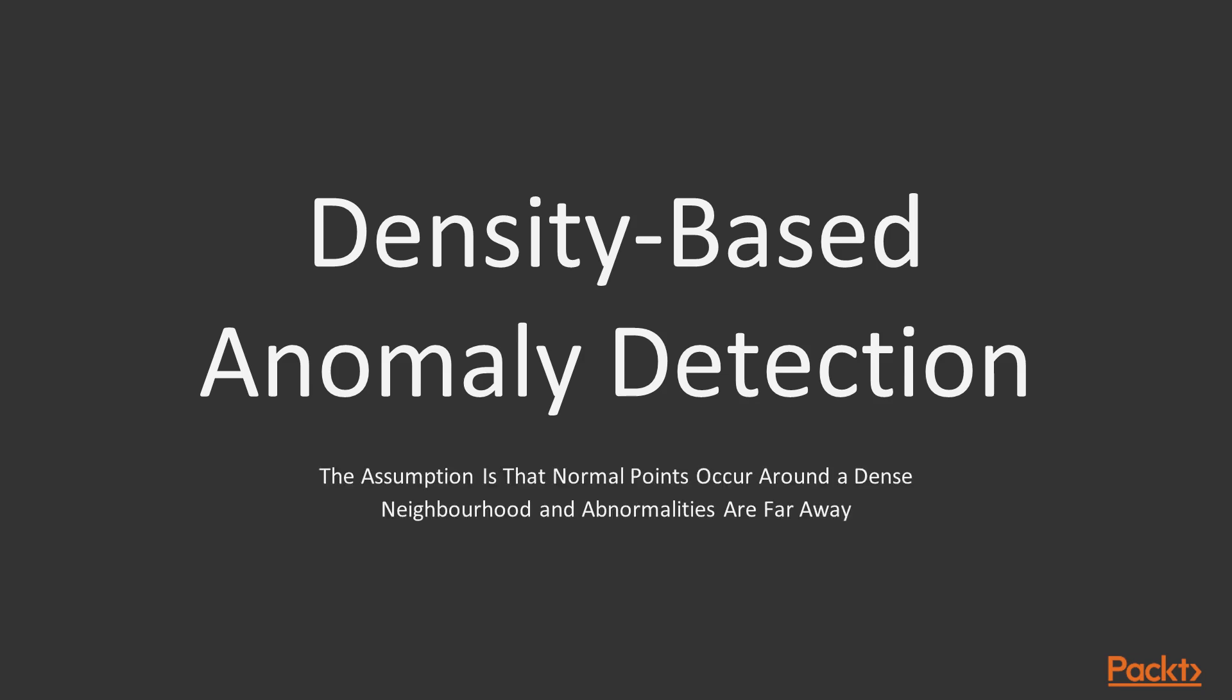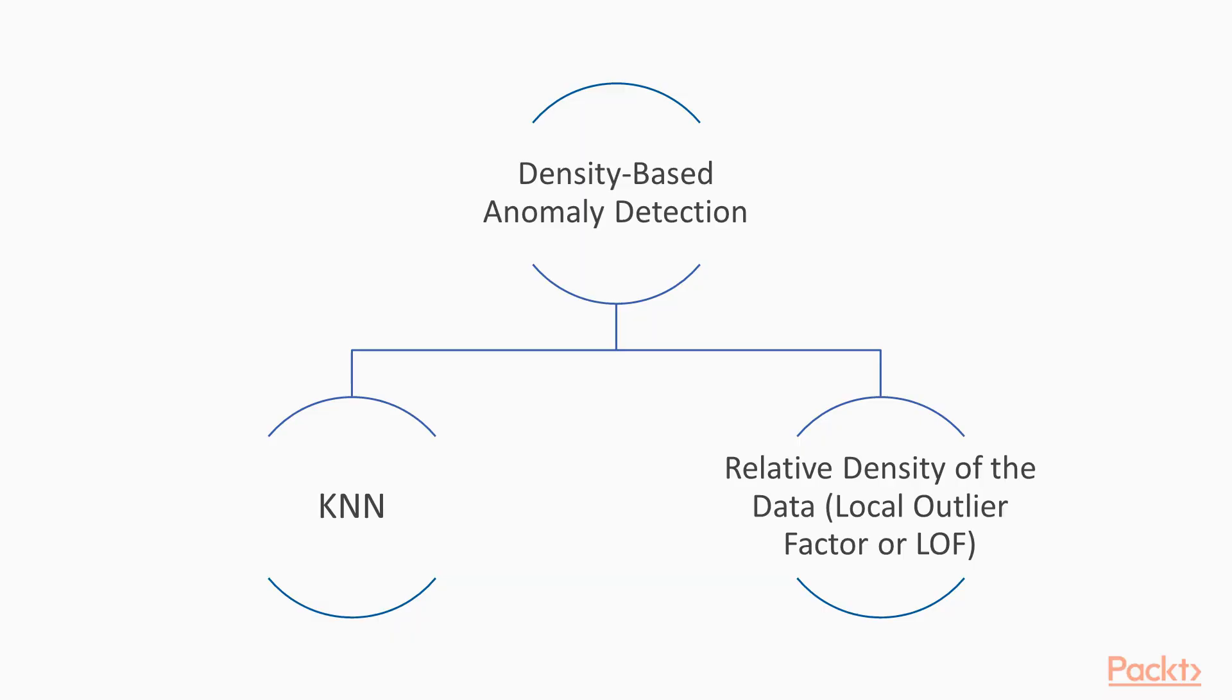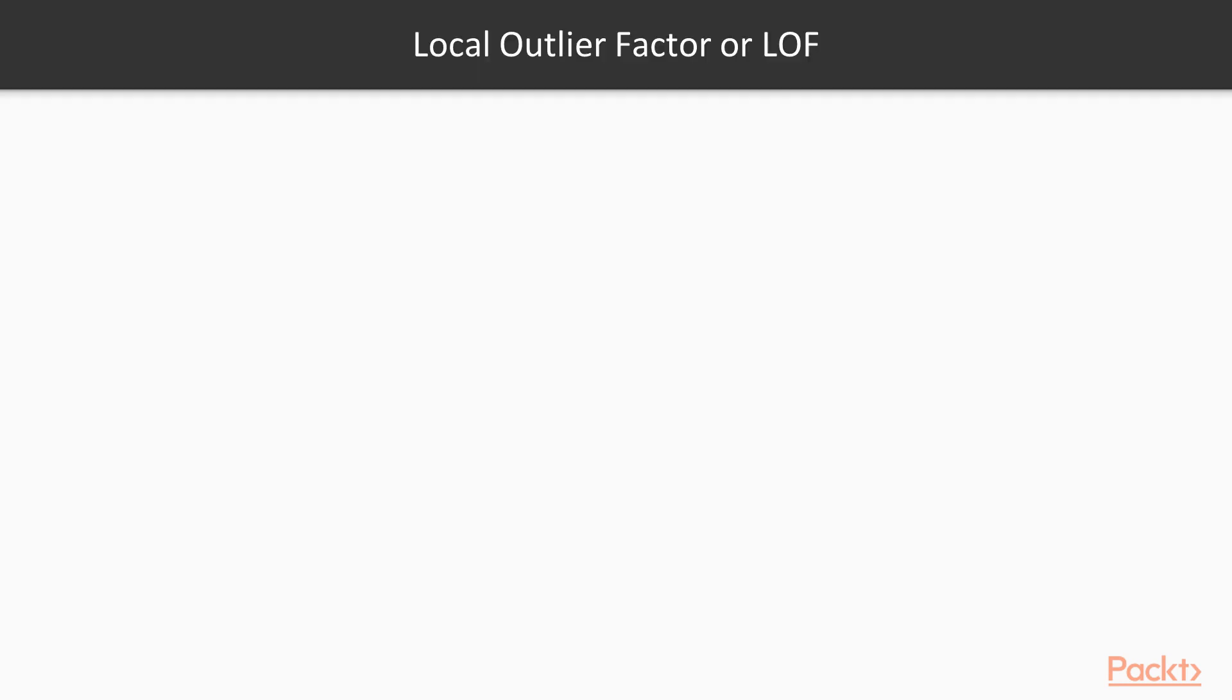The second method we are going to explain in this video is called the density-based anomaly detection method. In this method, the assumption is that normal points occur around a dense neighborhood, and abnormalities are far away. This method is mainly divided into two groups, KNN and relative density of the data. Local outlier factor, or LOF. Here, we are going to explain more about this LOF method.